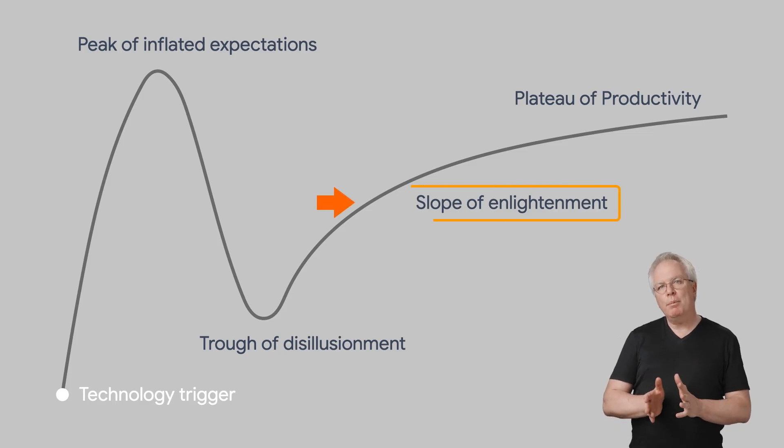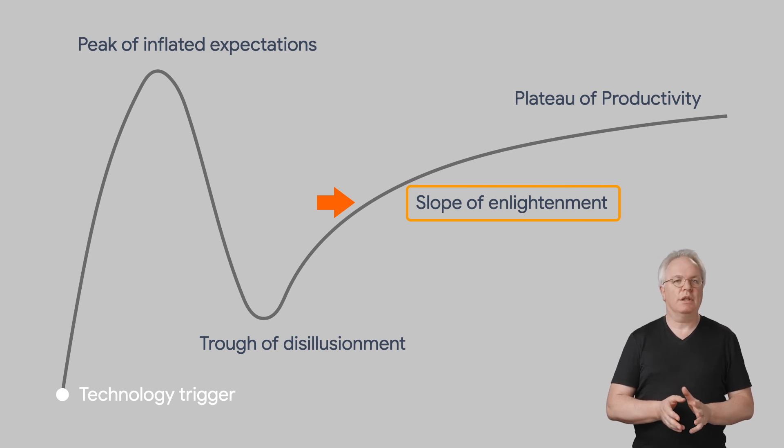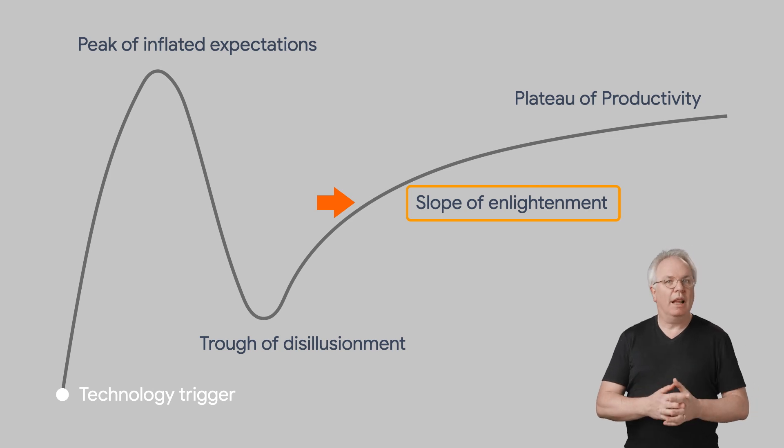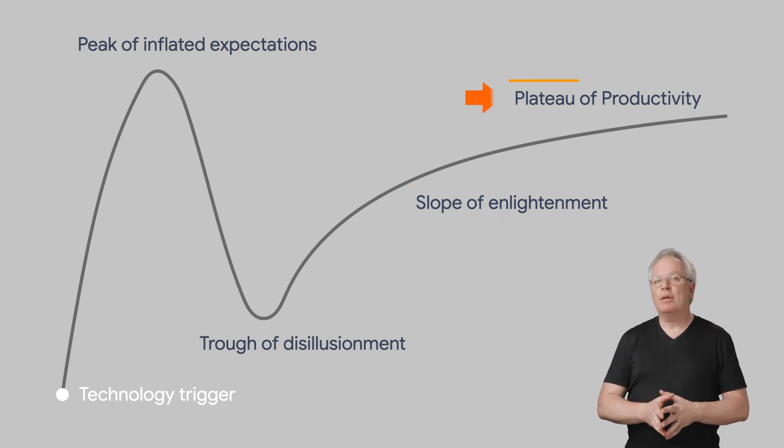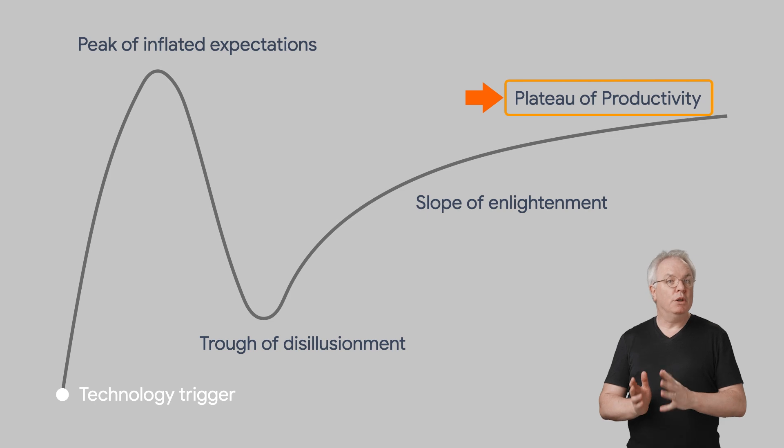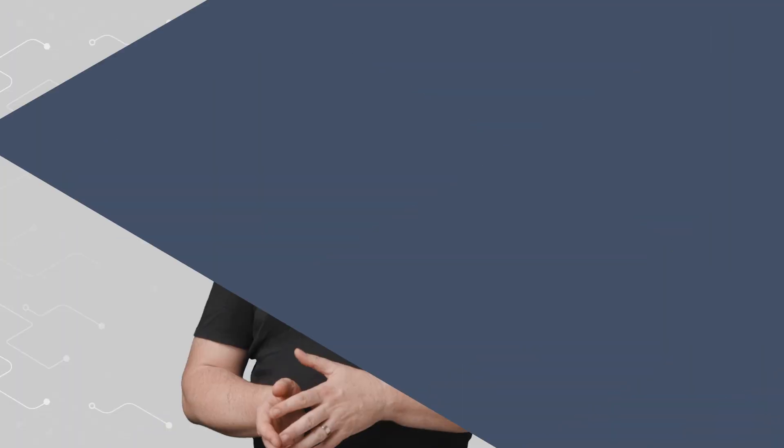But then, some people realizing the limitations begin to innovate around them, rising up the slope of enlightenment to the plateau of productivity. They develop a new innovation that works, and they succeed with it. With the mobile phone, much of the hype bubble burst when people realized it wasn't powerful enough to replace the laptop or the desktop, or it was limited by battery life, or multiple concurrent apps could not run effectively due to resource constraints. And all of those revolutionary ideas died.